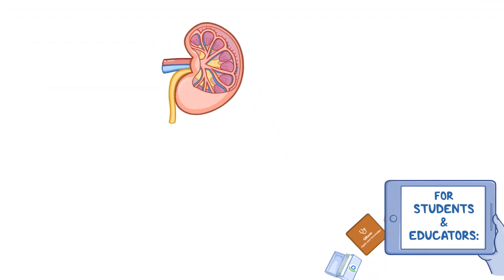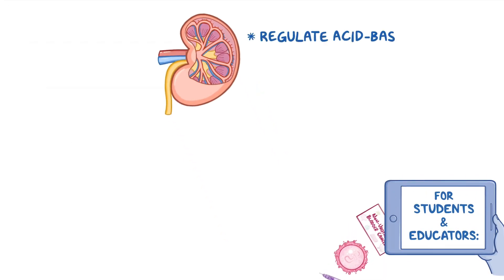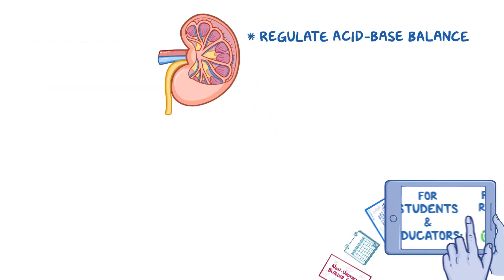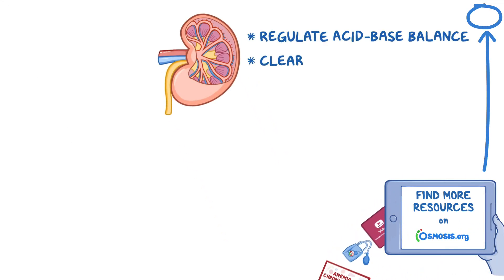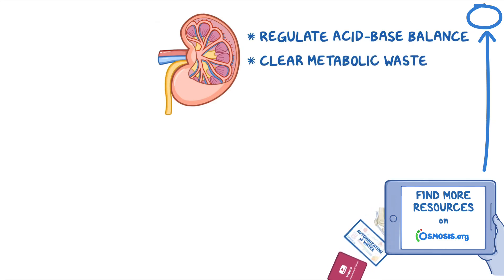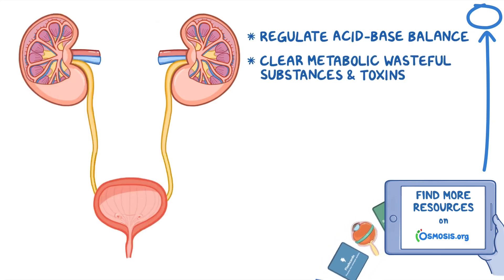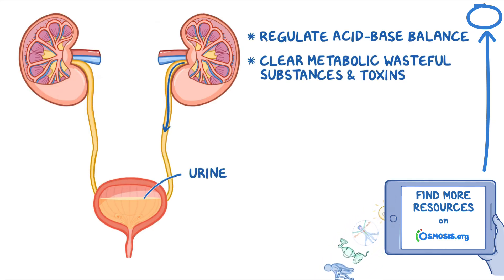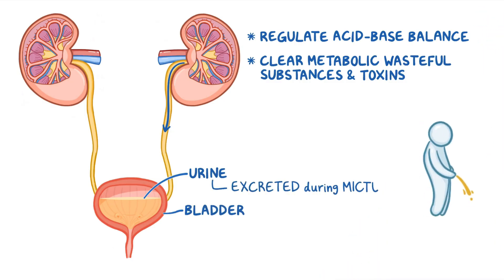In addition, the renal tubules are important in regulating acid-base balance. The kidneys also clear blood of metabolic waste substances and toxins. Finally, what leaves the tubules becomes the urine, which flows into the bladder and is excreted during micturition.